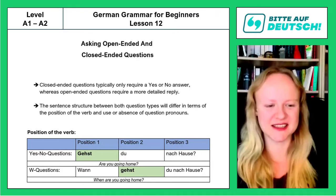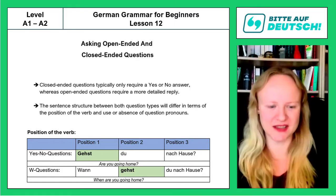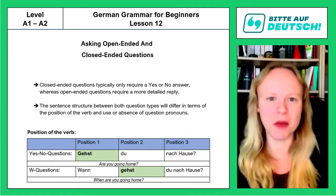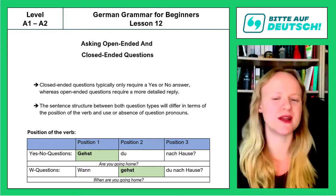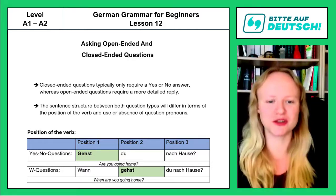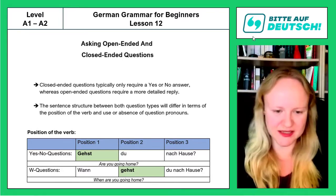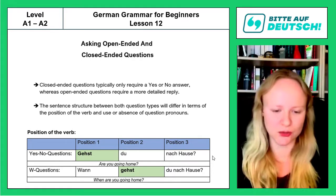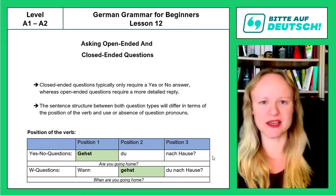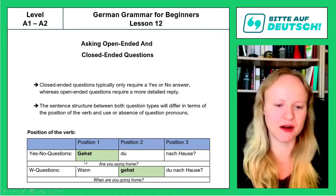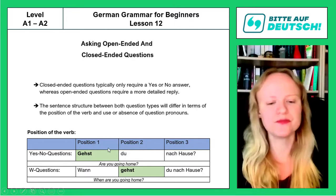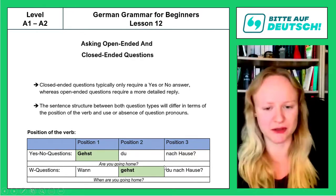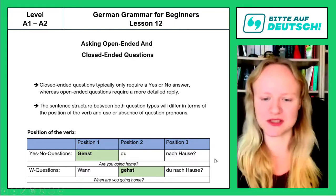What we already studied is the position of the verb in those two types of questions. In the very first lesson of this series, I explained that a yes/no question and a command are those two sentence types for main clauses where the conjugated verb occupies the first functional position, as in this example: 'Gehst du nach Hause?' — Are you going home? You can answer with yes or no. We place the conjugated verb 'gehst' in the very first position, the subject 'du' right after it, and then any object, addition, or direction at the end of the sentence.